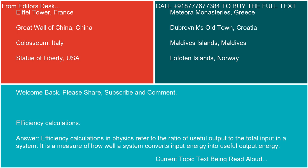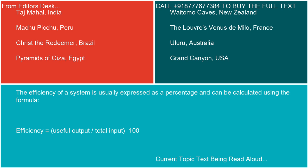Efficiency calculations in physics refer to the ratio of useful output to the total input in a system. It is a measure of how well a system converts input energy into useful output energy. The efficiency of a system is usually expressed as a percentage and can be calculated using the formula: Efficiency equals useful output divided by total input, multiplied by 100.